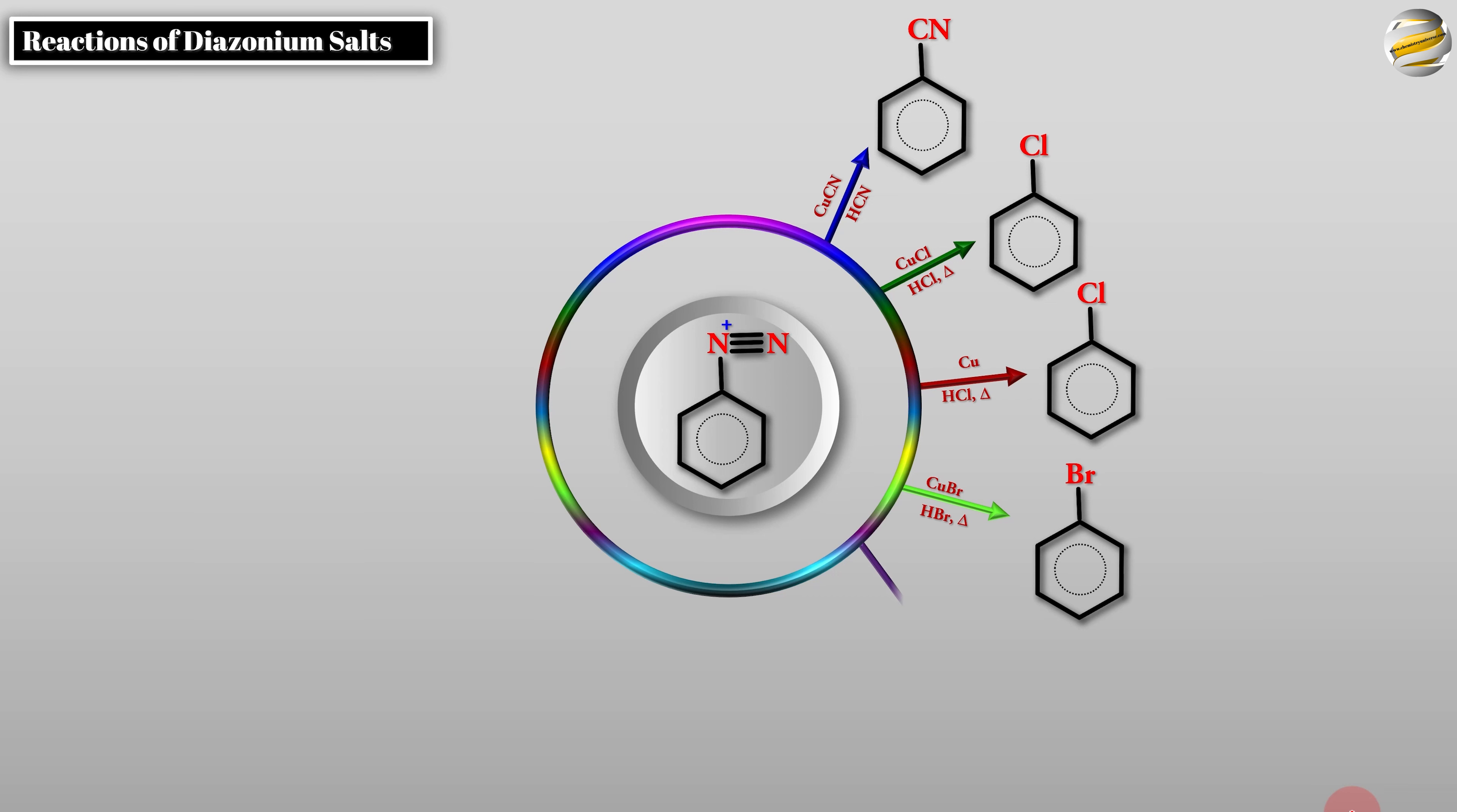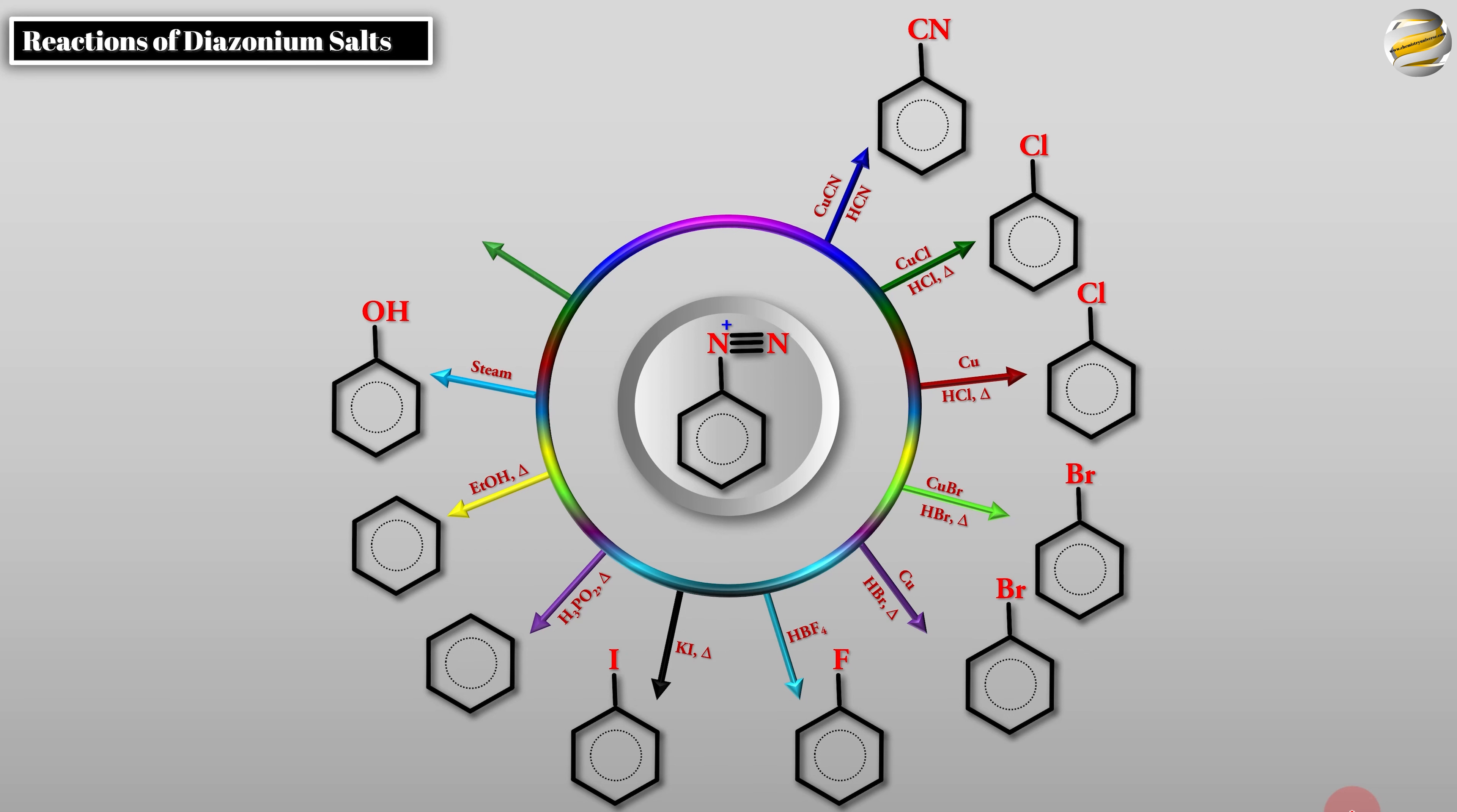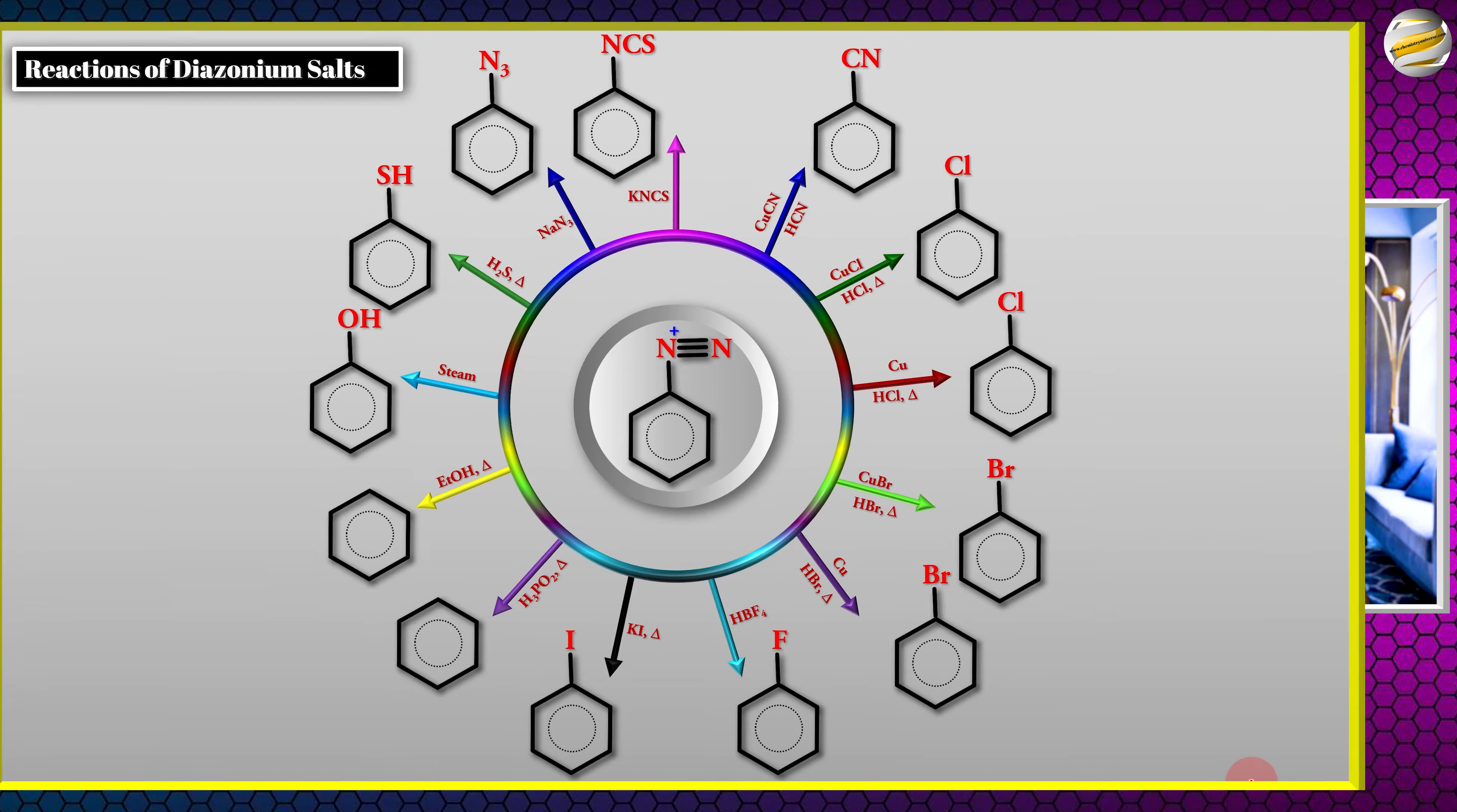You can get bromo even with Cu and HBr. If you use HBF4, you can get the fluoro one. If you use KI, you can get the iodo one. If you use H3PO2, you get benzene itself. You can use even ethanol, you will get benzene. If you use steam, water, you will get phenol. If you use H2S, you will get the thiol. If you use NaN3, you get azide. If you use thiocyanate, you will get this.